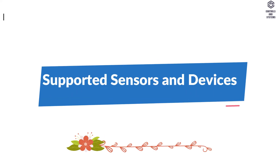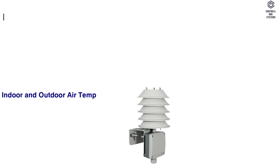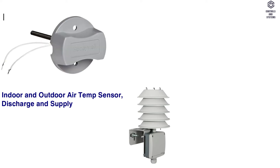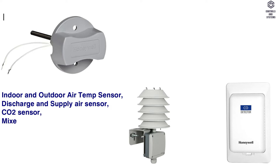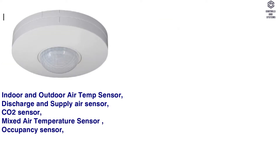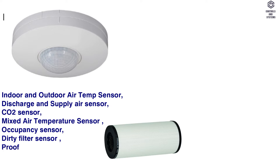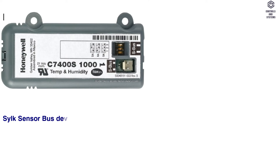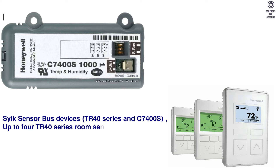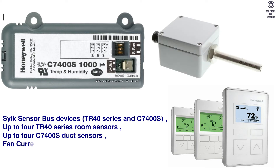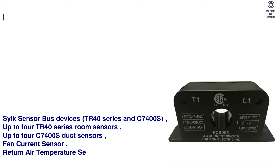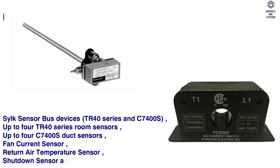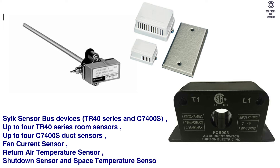Supported sensors and devices include: Indoor and Outdoor Air Temperature Sensor, Discharge and Supply Air Sensor, CO2 Sensor, Mixed Air Temperature Sensor, Occupancy Sensor, Dirty Filter Sensor, Proof of Airflow Sensor, Proof of Water Flow, SILK Sensor Bus Devices, TR40 Series and C7400S — up to 4 TR40 Series Room Sensors and up to 4 C7400S Stocked Sensors — Fan Current Sensor, Return Air Temperature Sensor, Shutdown Sensor, and Space Temperature Sensors.